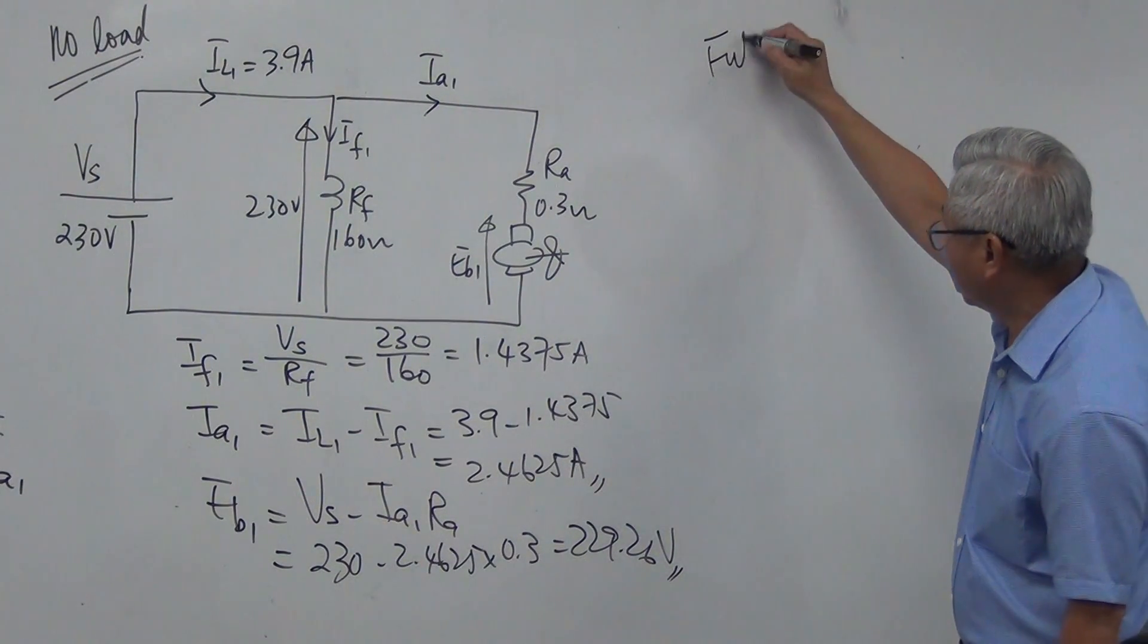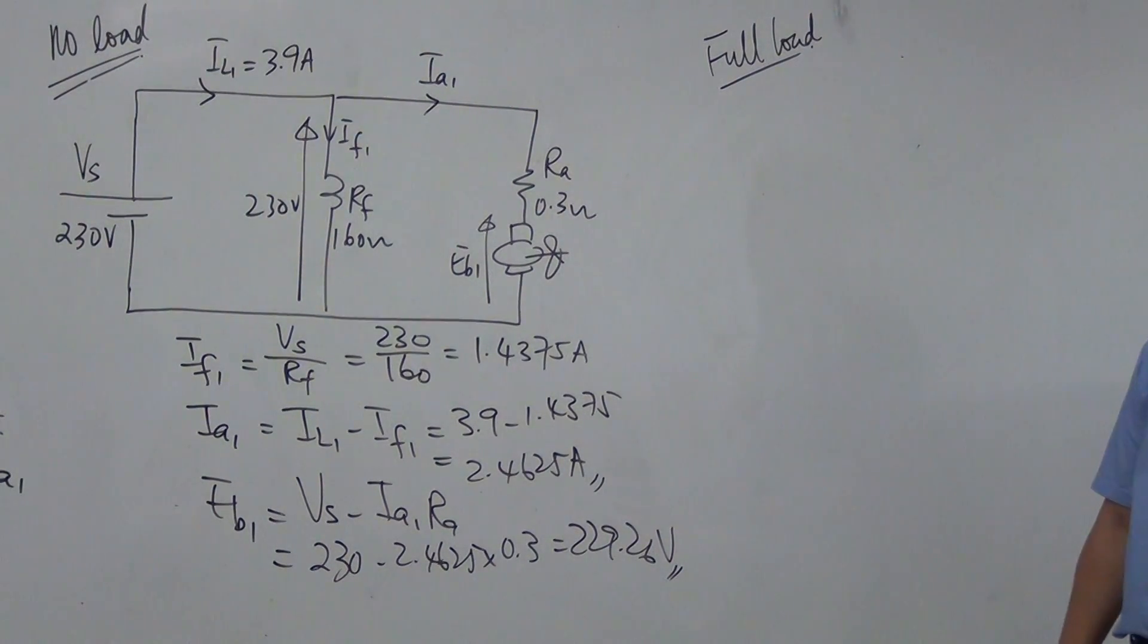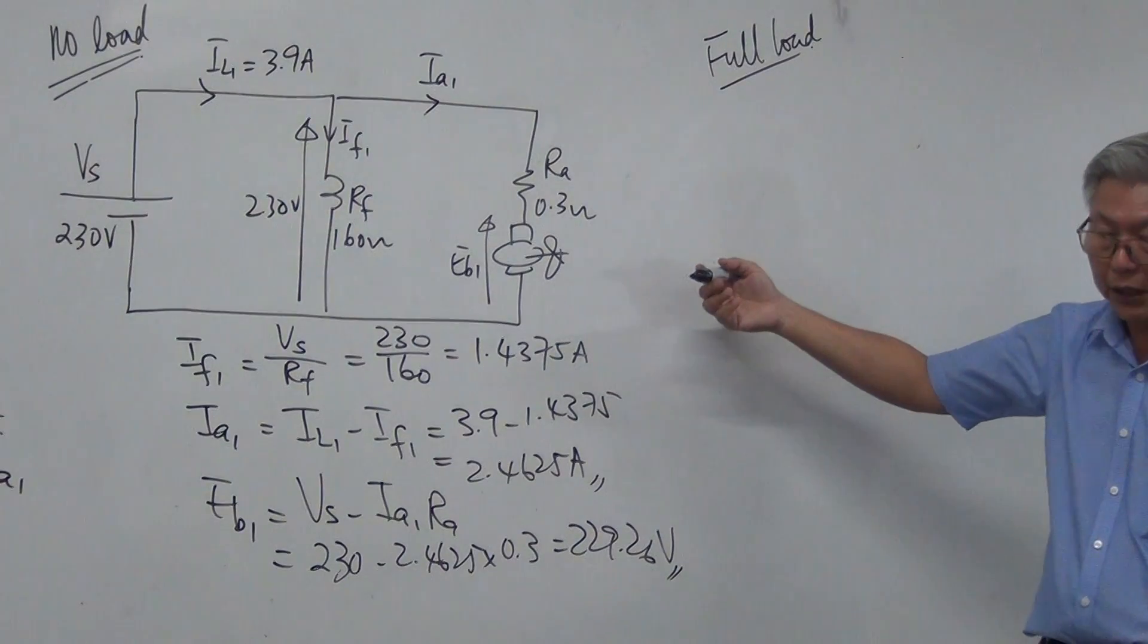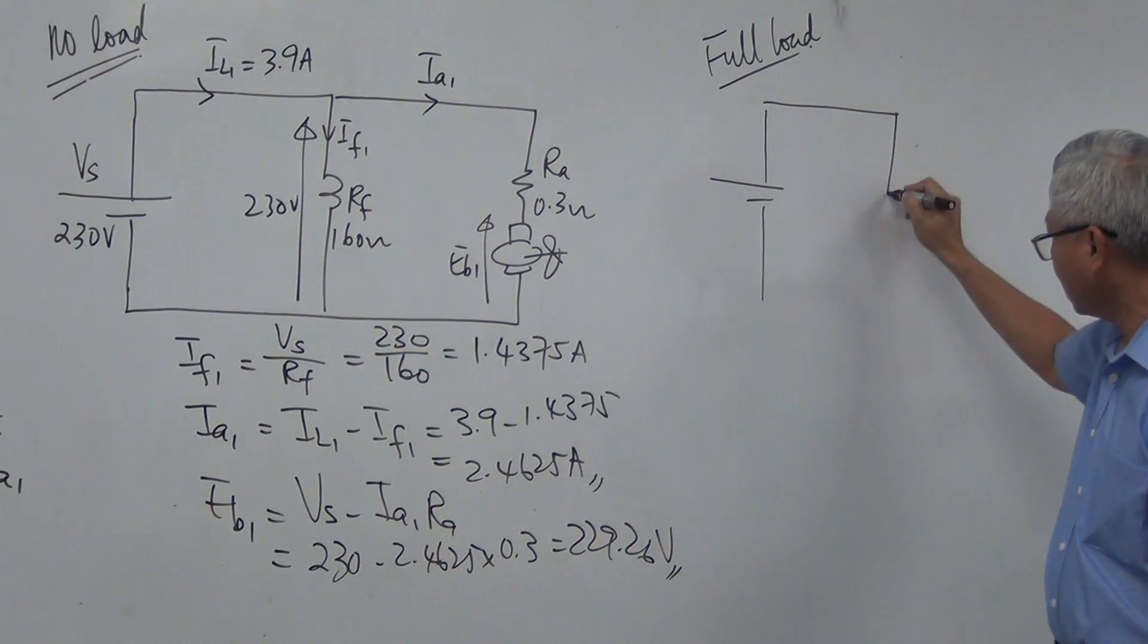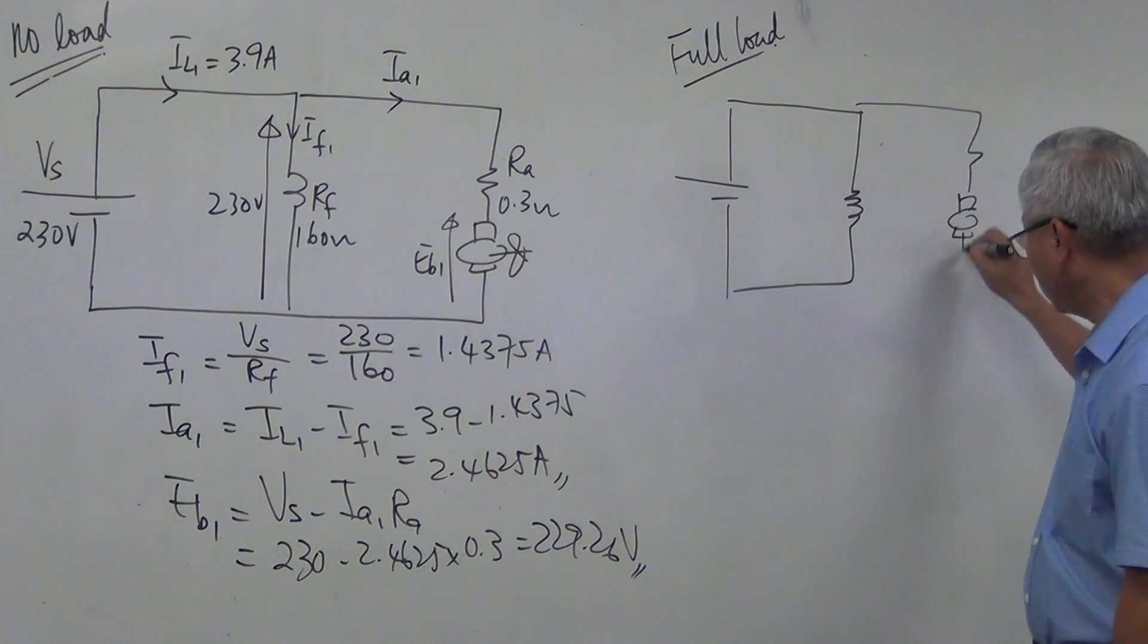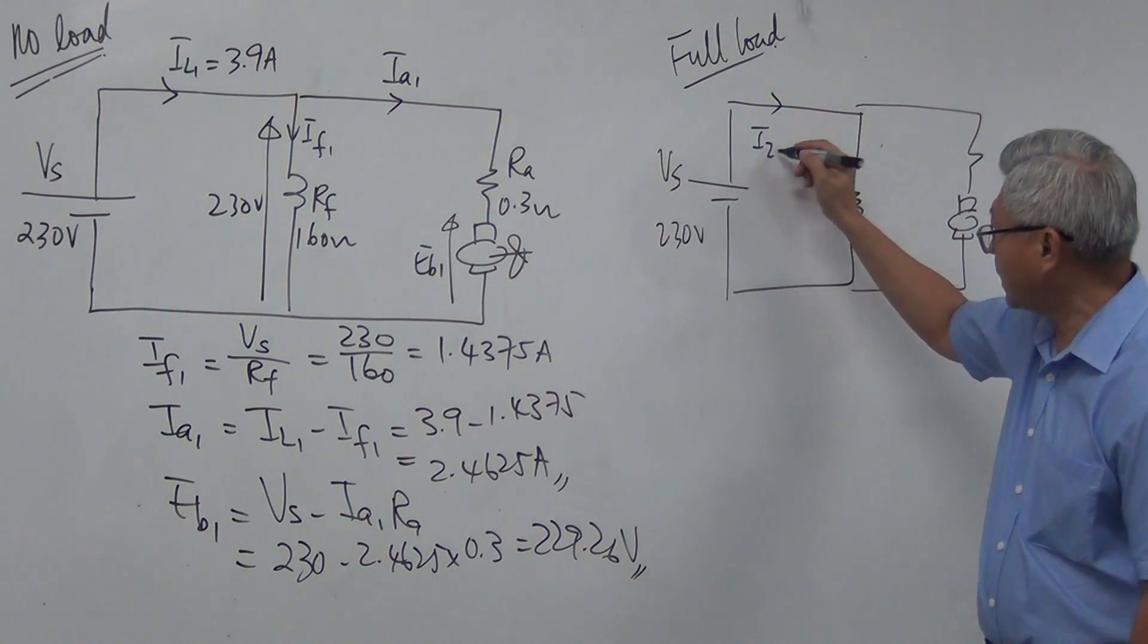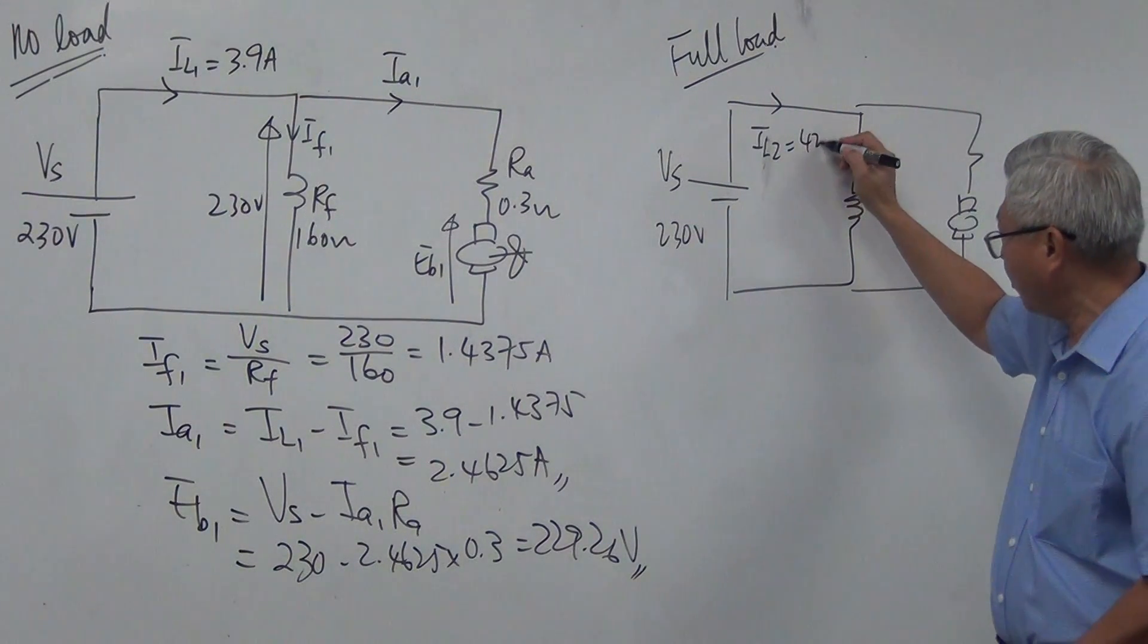A full load situation. When my motor is on full load basically means that I'm attaching a very heavy object to its shaft, and it has to work really hard, and it's going to draw a lot of current. So on full load, my circuit is still the same, but the current drawn will be different. On full load, the current drawn is much higher now. It is equal to 42 ampere.